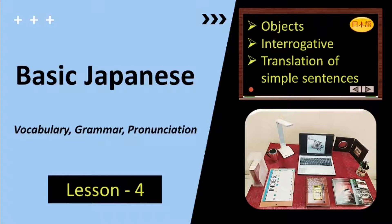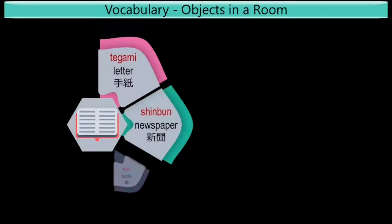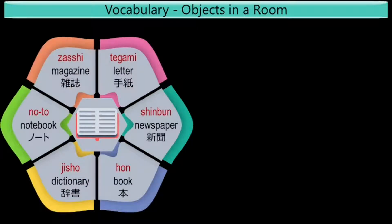If you have not watched the previous lessons, please watch them first and be thorough with the content presented in it. Let me begin with some objects which are commonly present in a room. The first one is Tegami, which means letter. It is made of two characters: Te, which means hand, and Kami, which means paper. When they are combined, it is pronounced as Tegami.